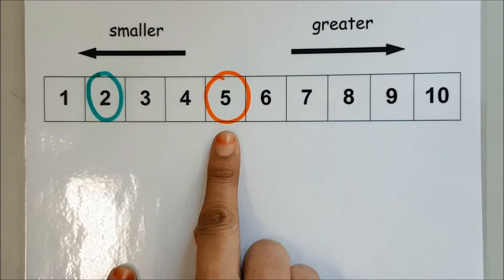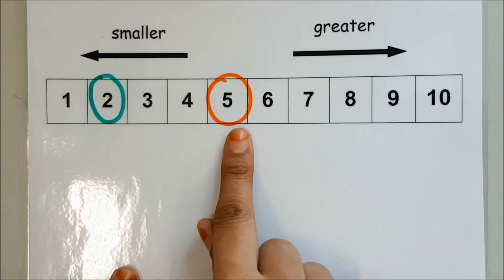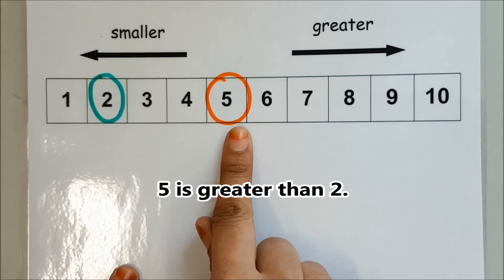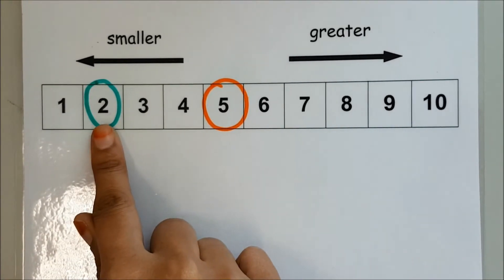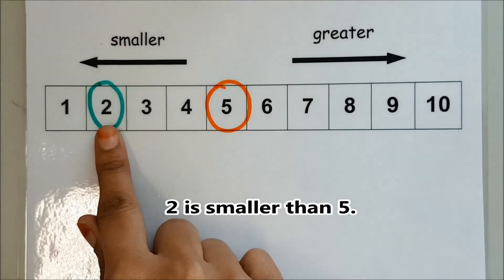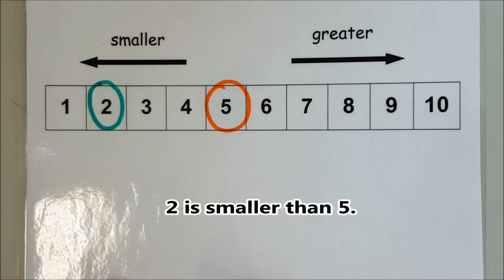Since 5 comes after 2, 5 is greater than 2. I can also see 2 is smaller than 5. Let's check our answer.